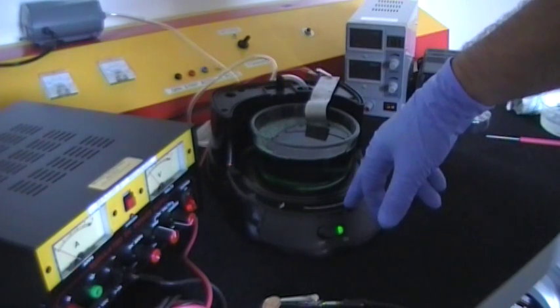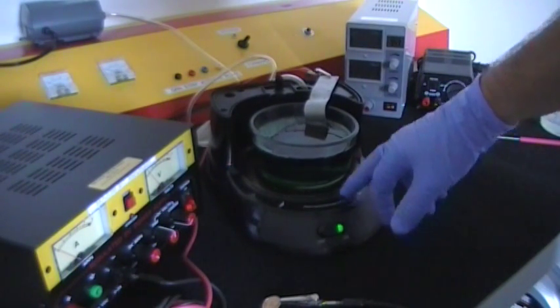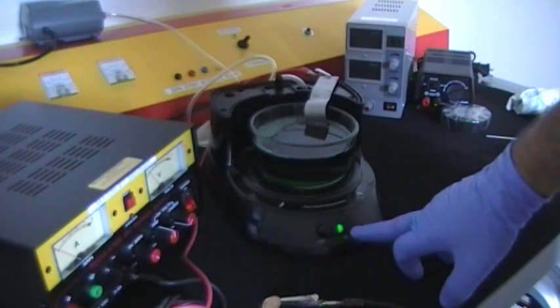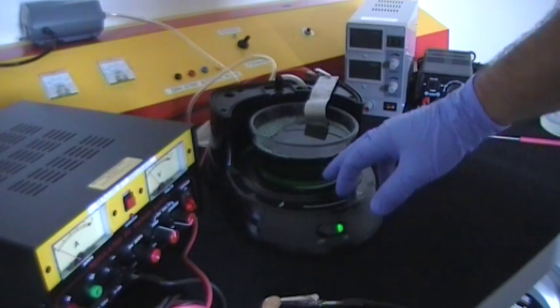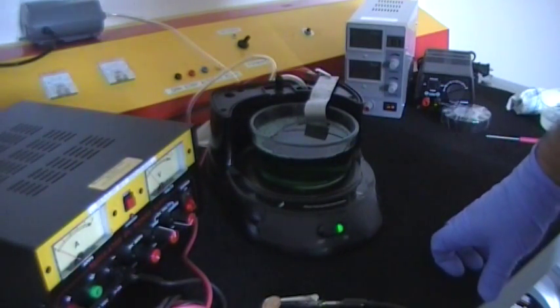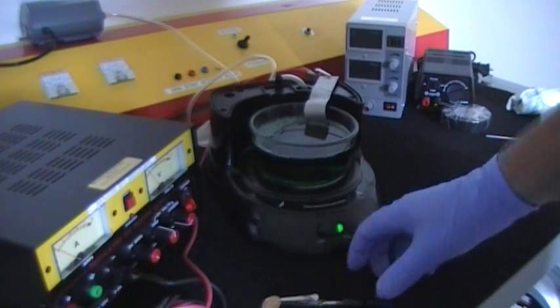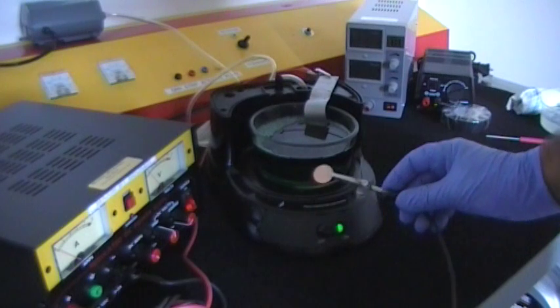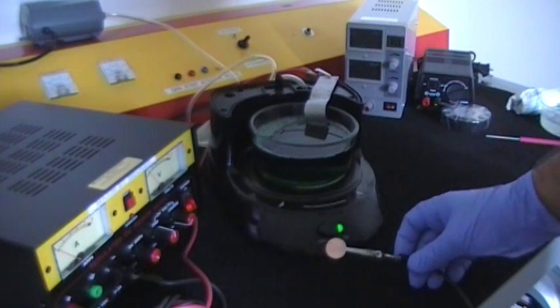If you wonder what this is, this is actually a coffee maker - it's the bottom of a coffee maker. What I'm doing is I'm heating the solution. This is the best and easiest way to apply nickel.